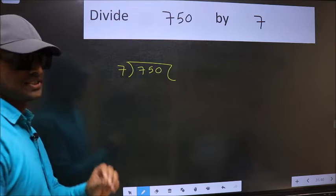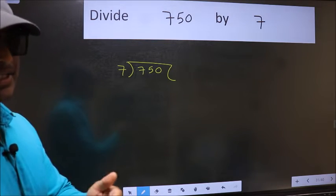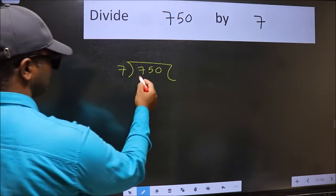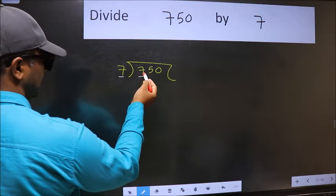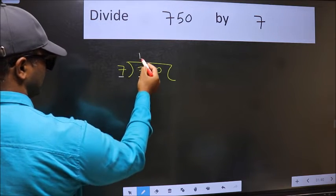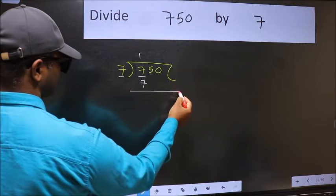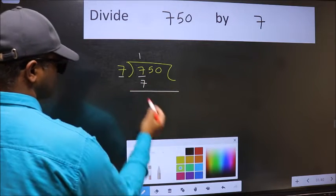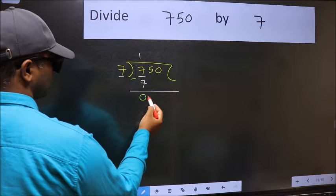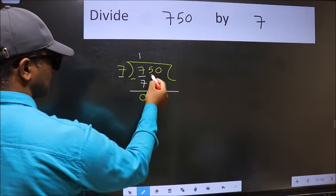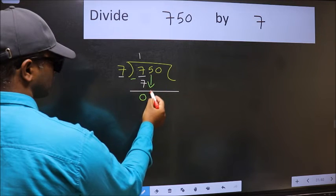This is step one. Here we have seven and here seven. When do we get seven in the seven table? Seven ones are seven. Now we subtract and get zero. After this, bring down the next number, which is five.